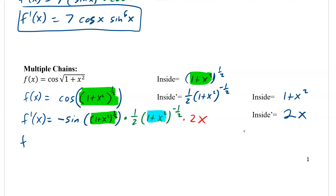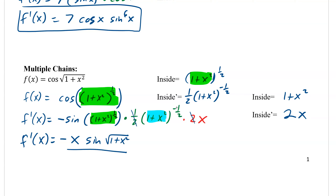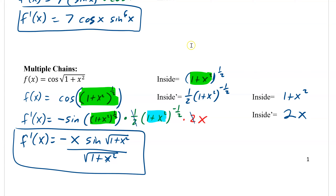These aren't fun, but the more you do them the better you get — they take practice. One-half times 2 cancels to 1, so we end up with negative x sine of √(1 + x²), divided by √(1 + x²) — because the negative exponent sends that term to the denominator. That's the most complicated form you'll encounter: trig functions with other algebraic expressions inside, requiring chain rule twice.